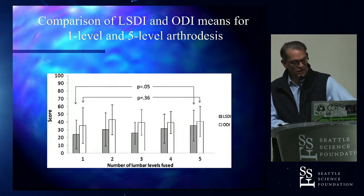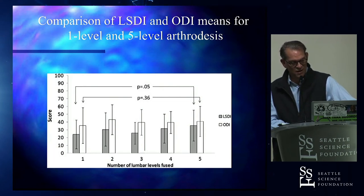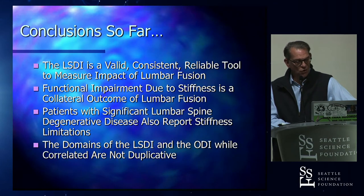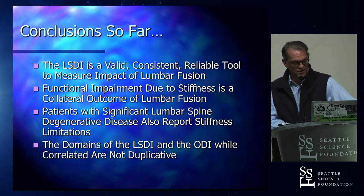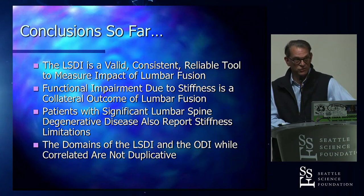We found that while there was a correlation between ODI and LSDI, patients' ODIs ended up very similar independent of how many levels were fused, whereas as we increased the number of segments fused we found a statistically significant difference in the LSDI — specifically between patients with one level and those with five or more levels. This suggests that as you have more fusion in your spine, you do experience more disability due to stiffness. We felt we had a valid, consistent, and reliable tool.